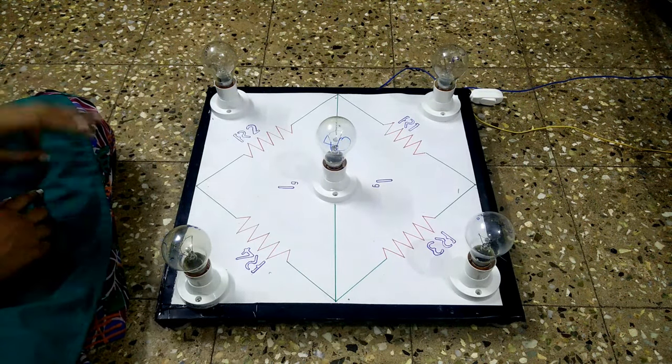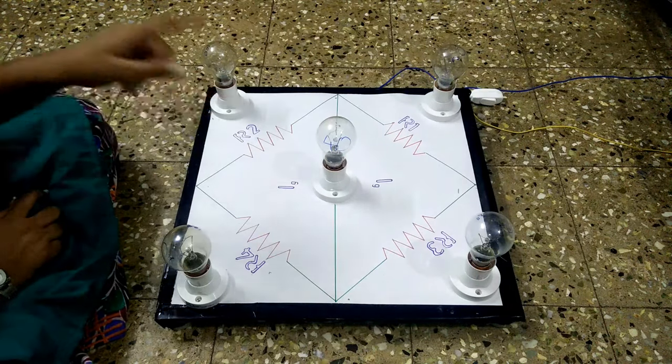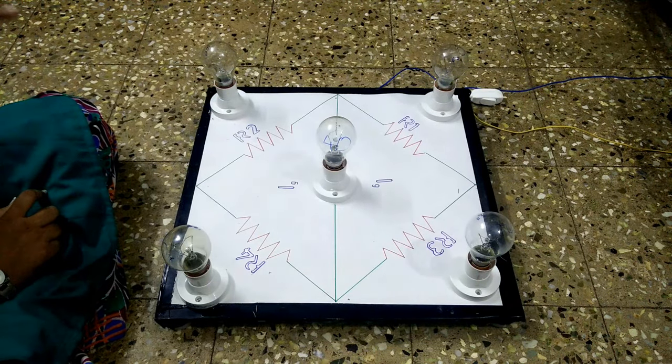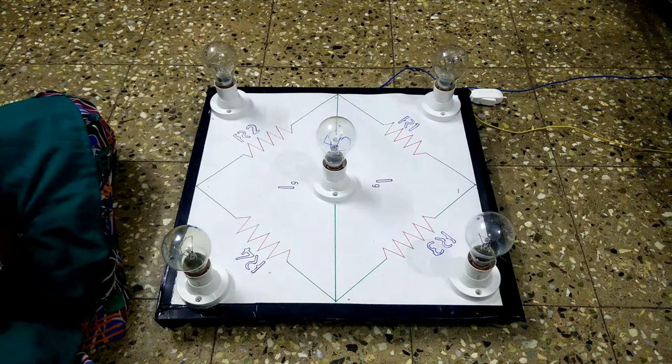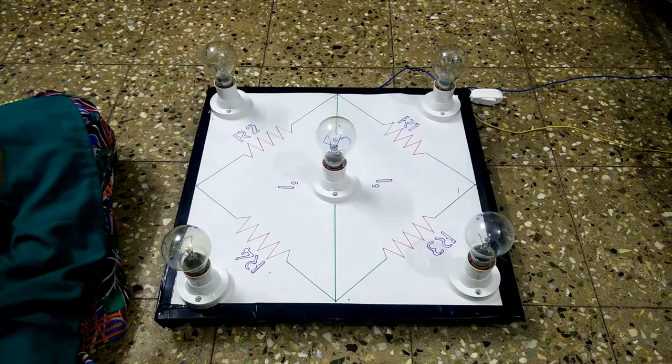It consists of four resistors, R1, R2, R3 and R4. But I have used bulbs instead of resistors for more clear and easy explanation.